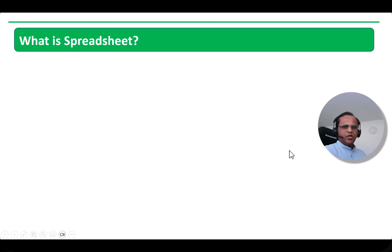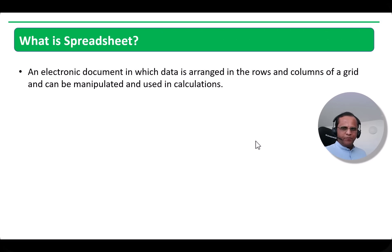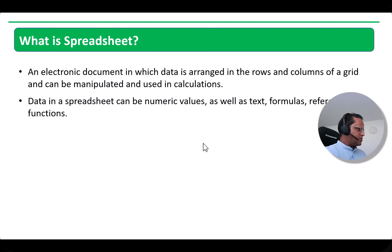First of all, we'll be talking about what is a spreadsheet, because as you know, Microsoft Excel is also known as a spreadsheet — it is an example of a spreadsheet. A spreadsheet is an electronic document in which data is arranged in the rows and columns of a grid and can be manipulated and used in calculations. You can say that a spreadsheet is just like a table consisting of rows and columns, also known as a grid.